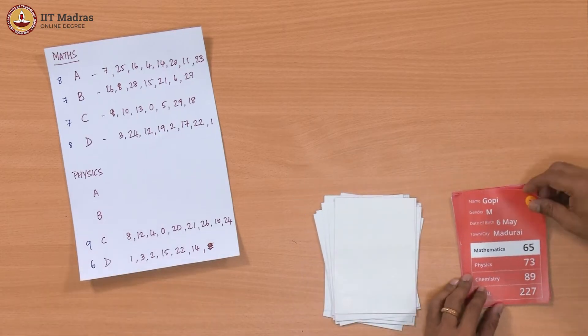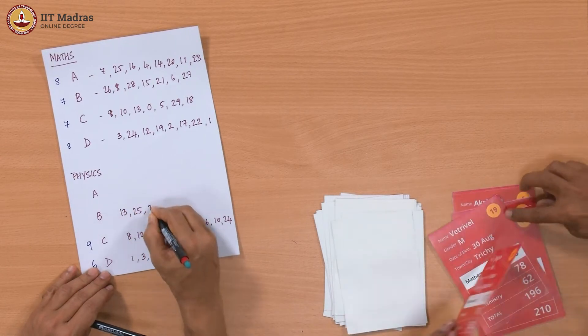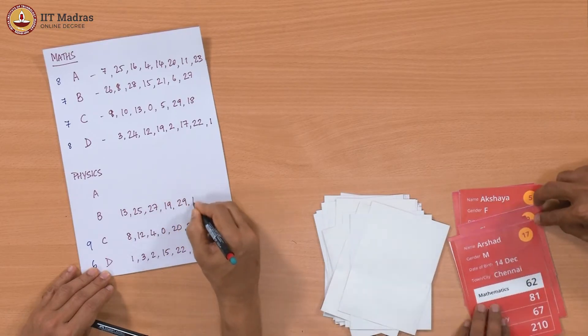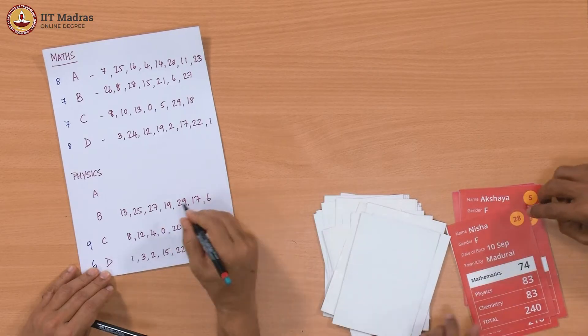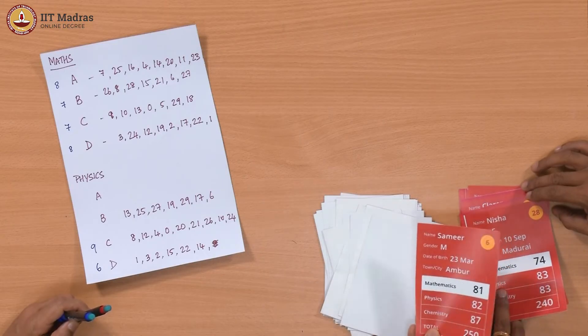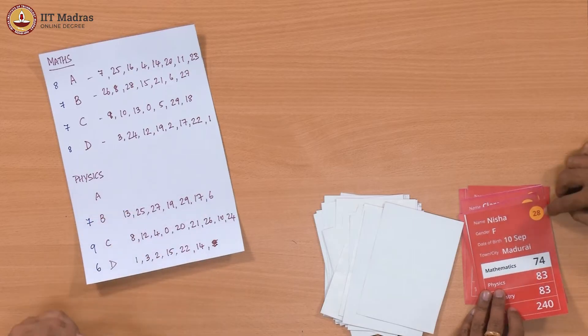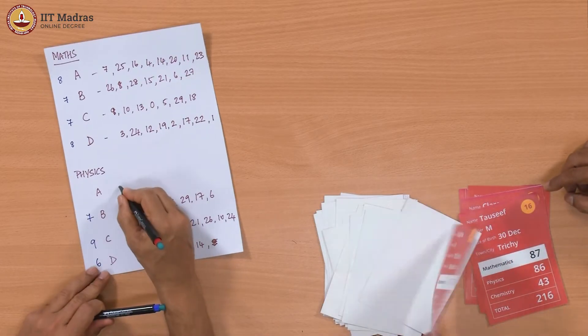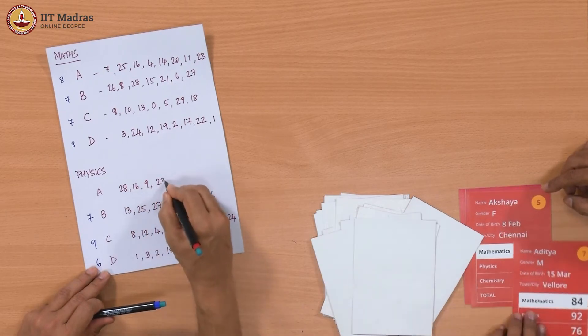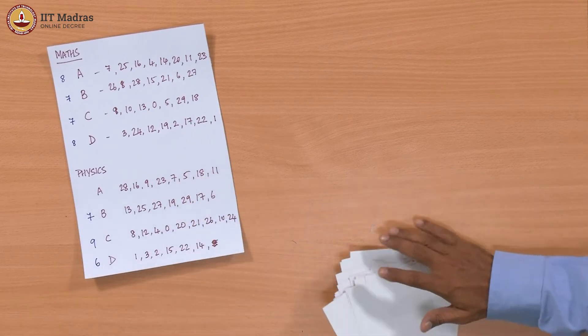So now we look at B for physics: 13, 25, 27, 19, 29, 17, 6. So we have done 7. And finally, we should have 8 for A: 28, 16, 9, 23, 7, 5, 18, and 11. So now we have a summary of the performance across physics and maths for the entire class.